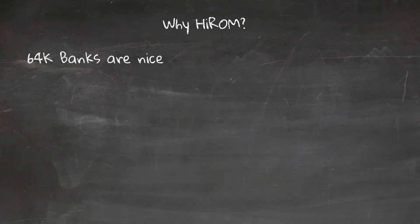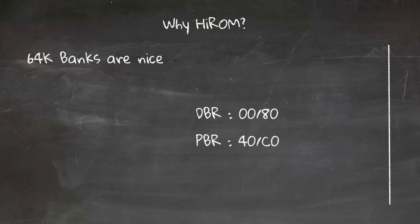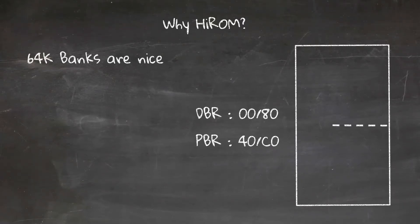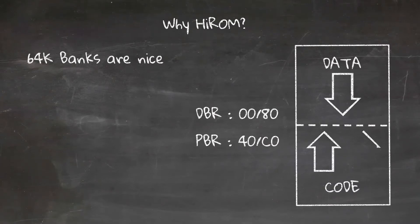Why High ROM? Sometimes splitting into 32k blocks is painful — large data sets such as large maps or lots of animations, 64k can be nice. You can set the data bank to the lower banks so it has registers and shared memory, and you can see the upper 32k. If you put all your data in the upper half and make it grow down, and your code in the lower half growing up, this gives you up to 32k of data and 32k or more of code in a single bank. It does need you to understand the 65816 and keep track of the program bank and the data bank. For starting out, start with Low ROM and switch if you want to and are more comfortable with the SNES.